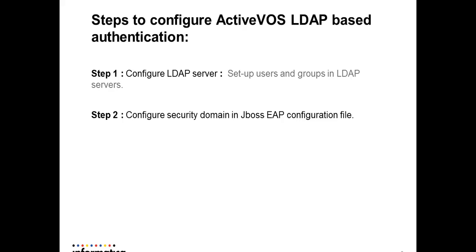It's a two-step procedure. First, we need to set up the LDAP server. In the LDAP server, we have to define the users which will have access to ActiveVos components, including console and central. Then we have to define groups so that the user will be properly authorized to access individual components within ActiveVos. Then we configure the application server to set up LDAP-based authentication for JBoss EAP servers.